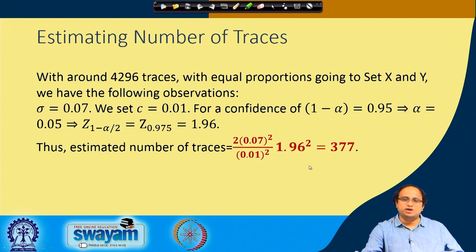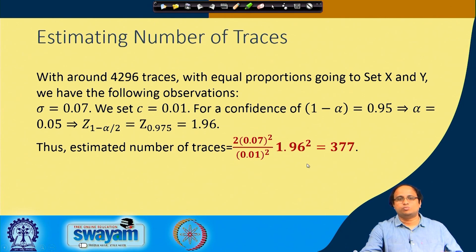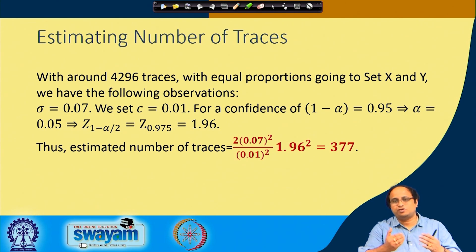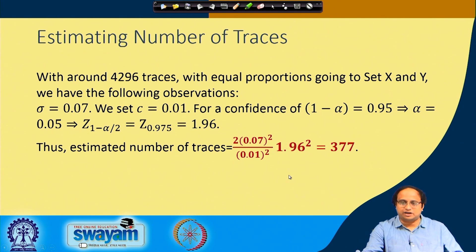Plugging into the equation n = 2σ²/c² × z_{1-α/2}²: n = 2 × (0.07)² / (0.01)² × (1.96)² ≈ 377. This is the rough estimate for the number of traces required to accept the null hypothesis with reasonably high confidence. If you are accepting the null hypothesis it means μ_x - μ_y ≈ 0, which corresponds to the wrong key guess, since in the wrong case both bins have similar averages. If you reject the null hypothesis those are your candidate keys.